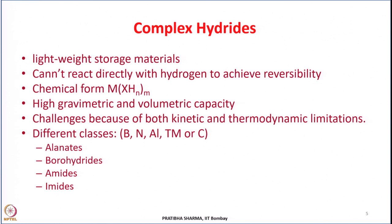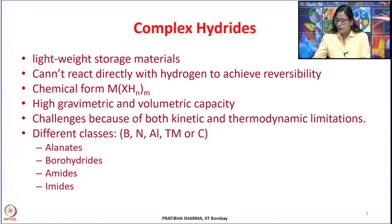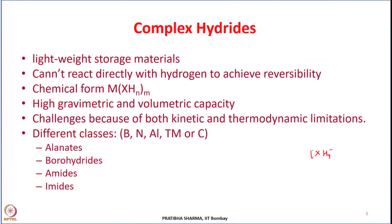Another class of materials which can be used for hydrogen storage are the complex hydrides. In complex hydrides, hydrogen is covalently bonded with another metal or non-metal, forming an anion which is then bonded with a metal cation. The difference between complex hydrides and metal hydrides is that metal hydrides can be directly regenerated or charged again after discharging by exposing to hydrogen at certain temperature and pressure conditions.